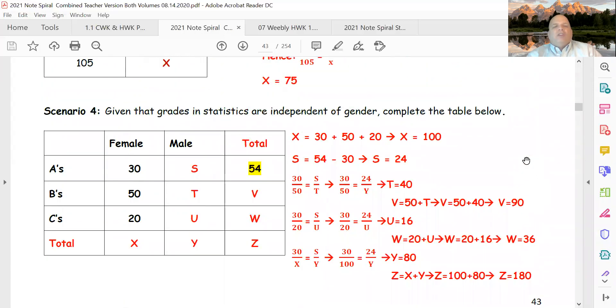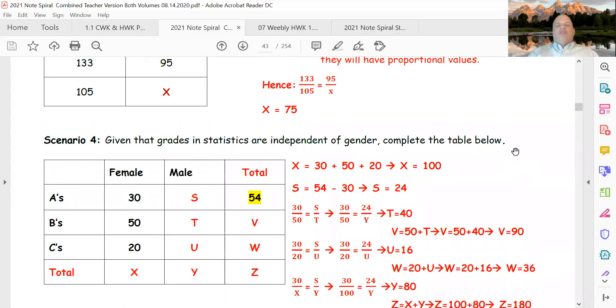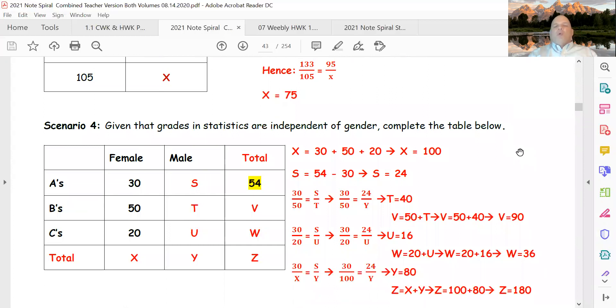So that's independence. Independence is going to say that they're proportional in nature. There's more to learn about independence, but for this section, if something's independent we want you to recognize that it's proportional. If it's not proportional then there's a relationship between the variables.